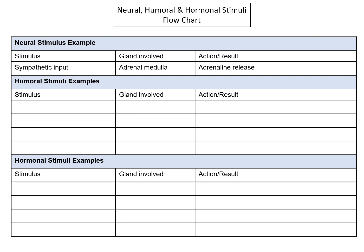Let's talk about humoral stimulus. A great example is insulin release from the pancreas. The pancreas monitors blood glucose levels — if blood glucose levels increase, that's the stimulus. The pancreas picks up on that and releases insulin, which causes glucose to be taken up by the cells so they can use it to make ATP.